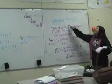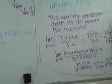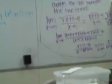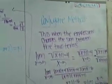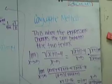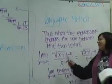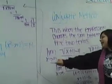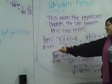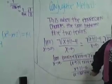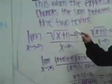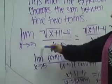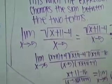Then the conjugate method. This is when the expression changes the sign between the two terms. This example is the limit as x approaches 5, and your equation is the square root of x plus 11 minus 4, all over x minus 5.